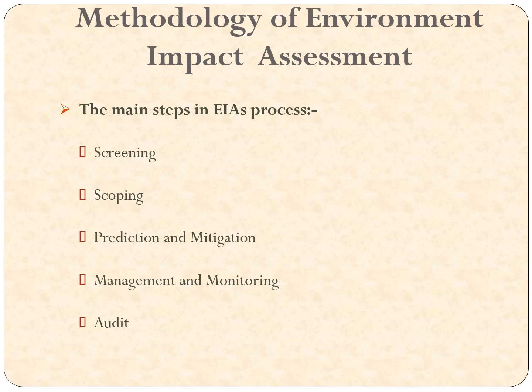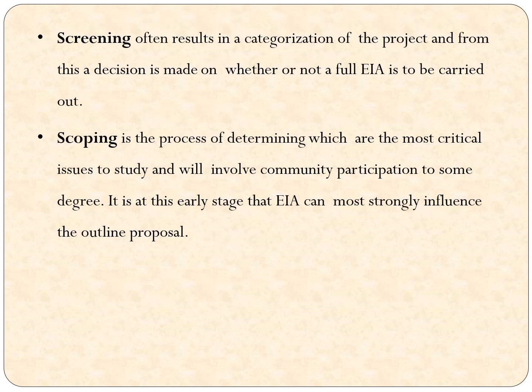The main steps in EIA are: screening, scoping, prediction and mitigation, management and monitoring, and finally auditing. Screening results in categorization of the project and a decision is made whether a full EIA is required or not. Scoping is the process of determining which are the most critical issues to study, and it involves community participation to some degree. Scoping discusses what critical issues must be considered and which will involve community participation.